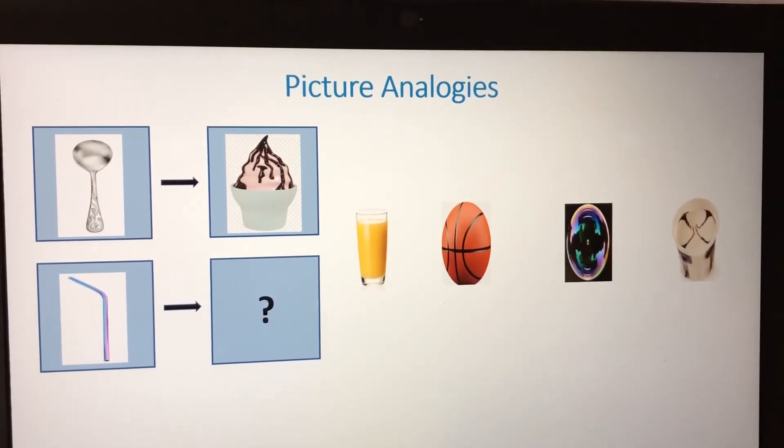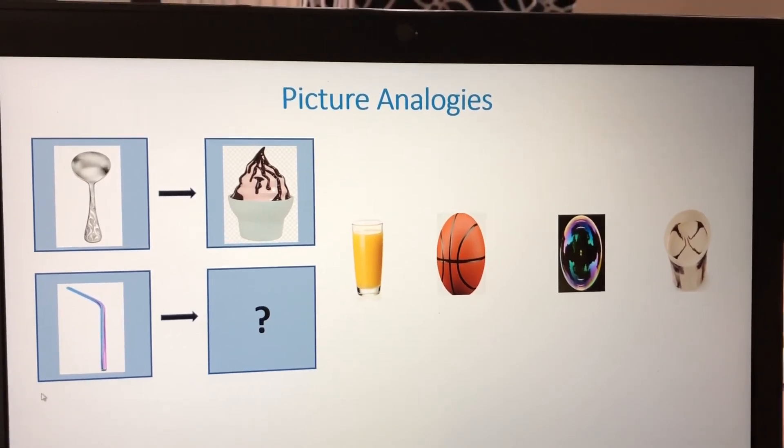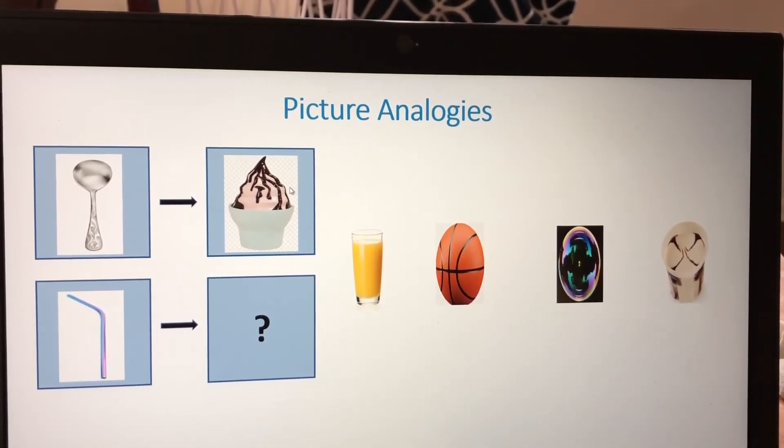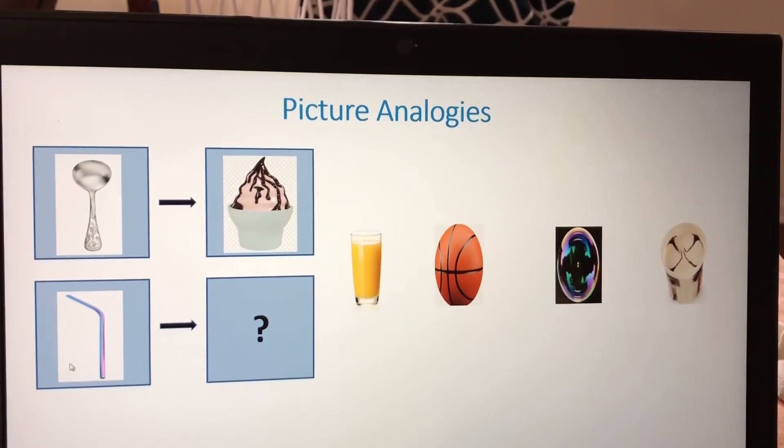Picture Analogies. The first picture is a spoon. The second is an ice cream. In the bottom, there's a straw.